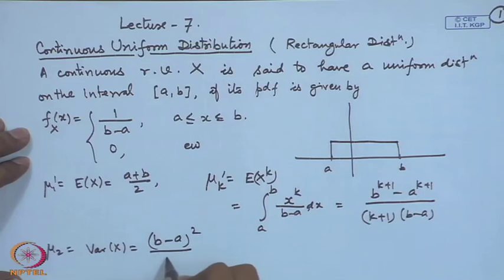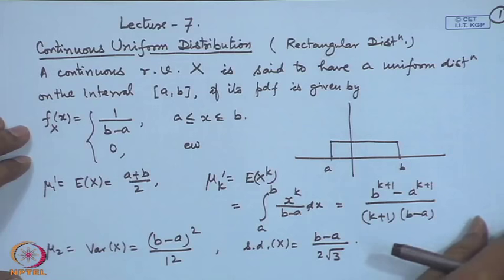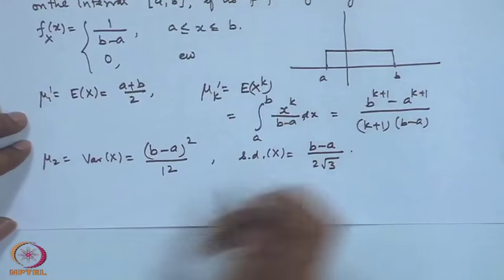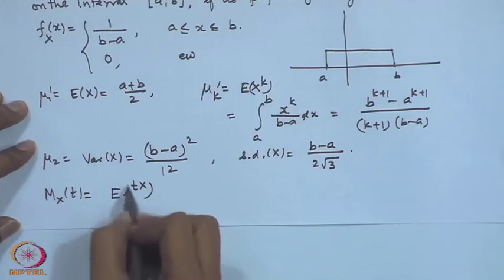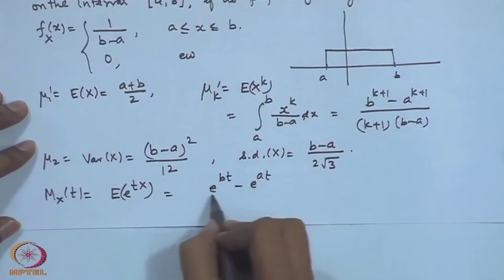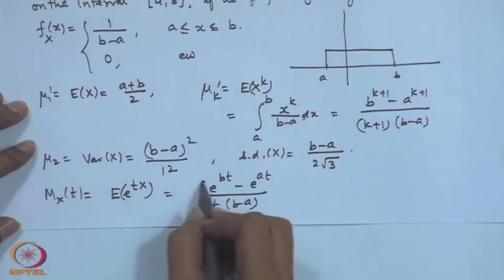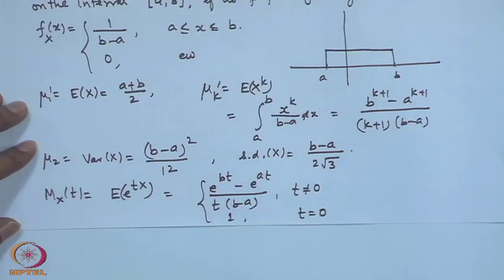The standard deviation is (b−a) / (2√3). The moment generating function is E[e^(tx)] = (e^(bt) − e^(at)) / (t(b−a)) for t ≠ 0, and equals 1 for t = 0. As mentioned, the uniform distribution has uses when the density is assumed to be constant.